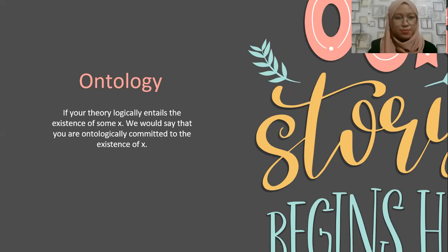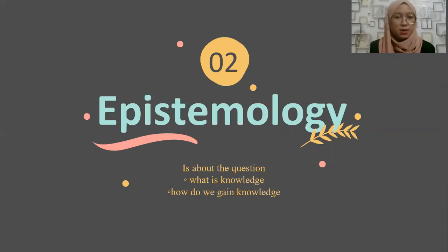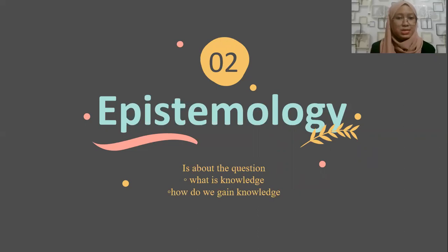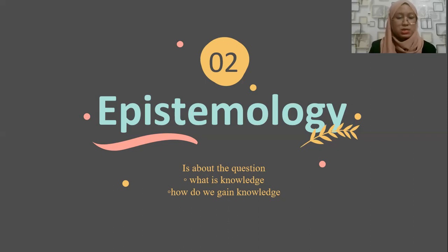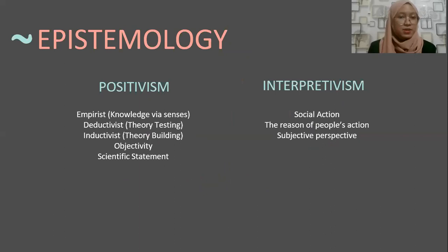Now we are going to explain epistemology. Epistemology is about the question: what is knowledge and how do we actually get knowledge? If there is a reality out there, as we discussed in ontology, we now pose the second question: how can we understand reality, or can we understand reality, or do we need to measure reality? Usually in textbooks, there is a distinction between a positivist view and a more interpretive view.